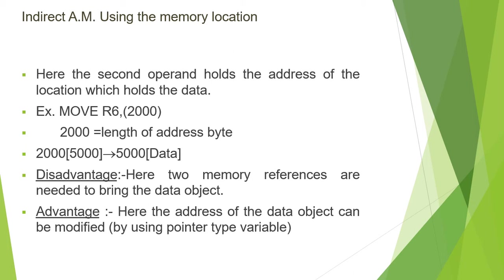In indirect addressing mode, the operand part contains an address which is the address of the target address, and the target address holds the actual data. For example: MOVE R6, 2000. Here R6 is the destination and 2000 is the operand — the first address. It refers to another address where the actual data is present. 2000 is the first address and 5000 is the actual memory address where the operand value is present. The processor first checks memory location 2000, finds a path to address 5000, then accesses memory location 5000 where the data value is present.